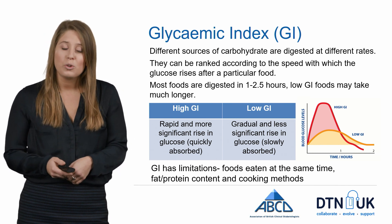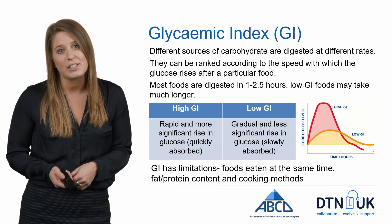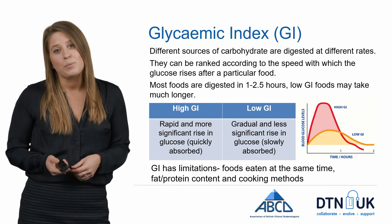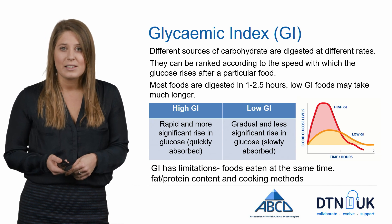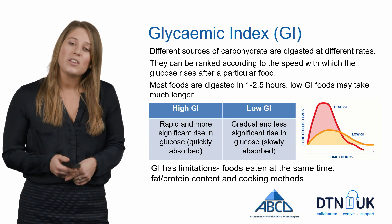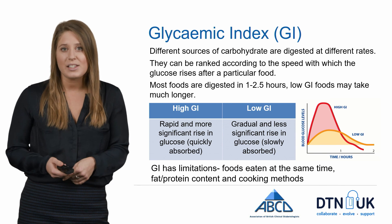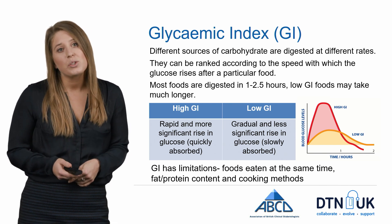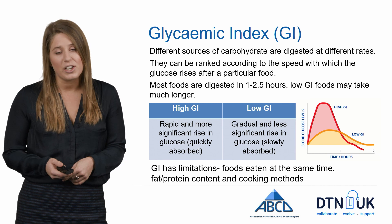Foods that cause a short, sharp, fast rise in glucose levels — those that are quickly absorbed — are referred to as high glycemic index carbohydrates. Whereas foods that cause a slower, steadier and more gradual rise in glucose levels are referred to as low glycemic index carbohydrates.